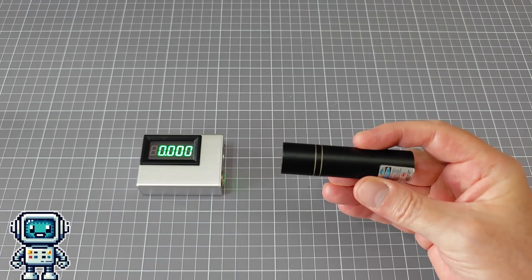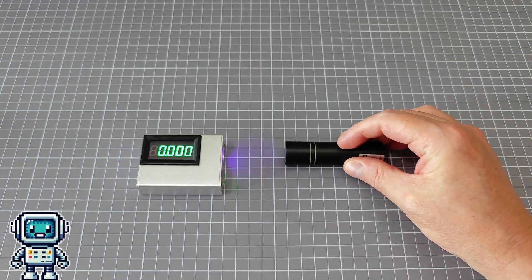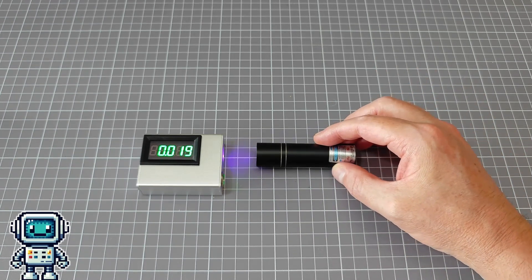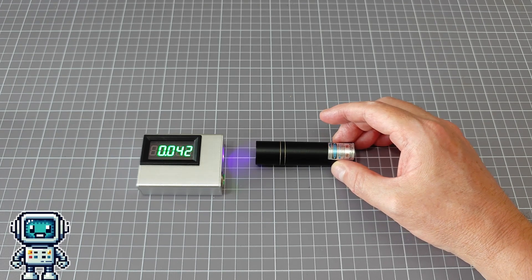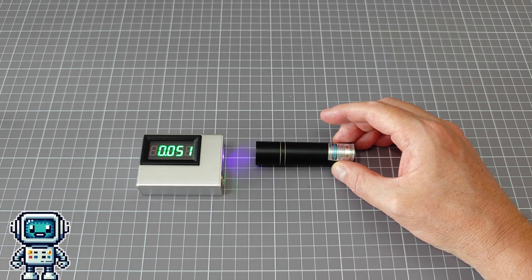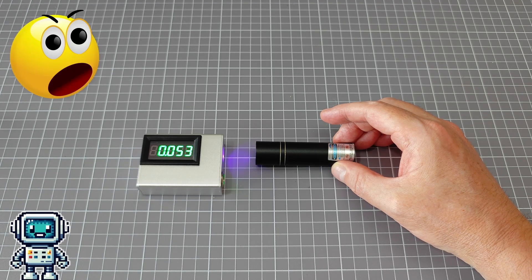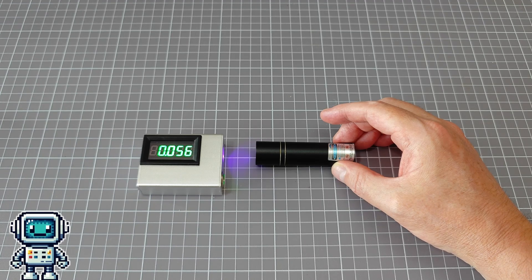This violet laser is a good example. The device label states it has a power output of less than 1 milliwatt, which means a user should not really need to wear eye protection. We would never have guessed that in reality the optical power output is close to 60 times higher than the specification, and for sure is a serious danger to unprotected eyes.